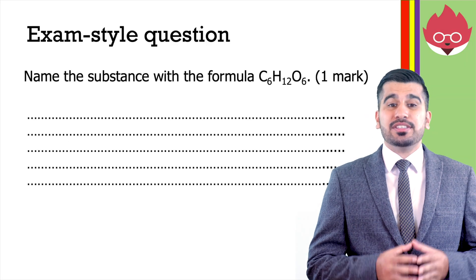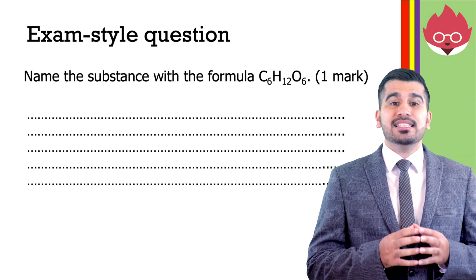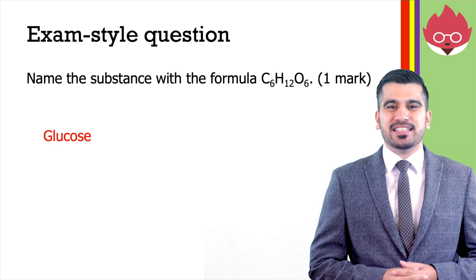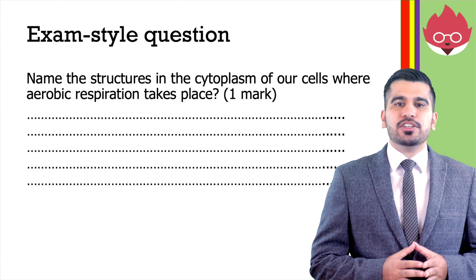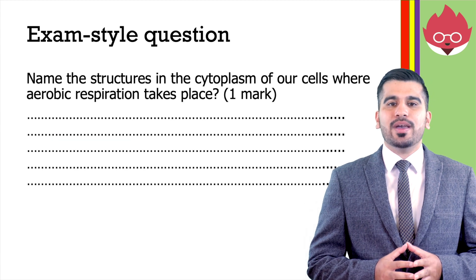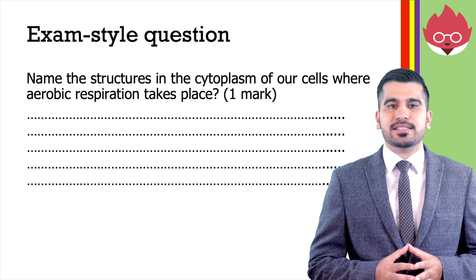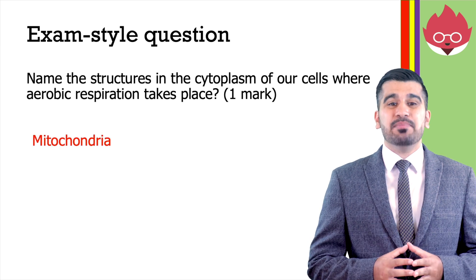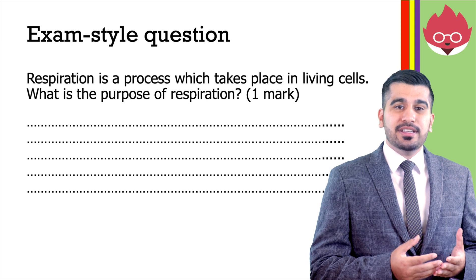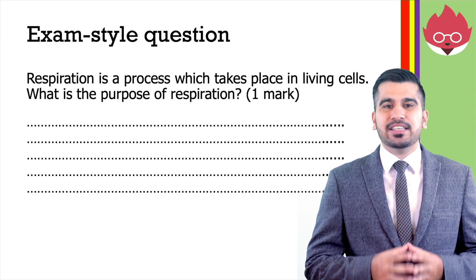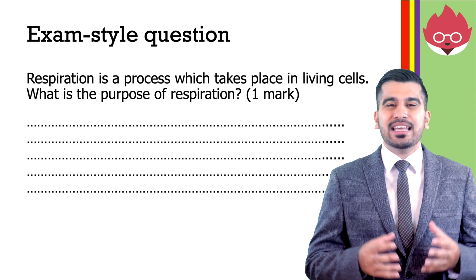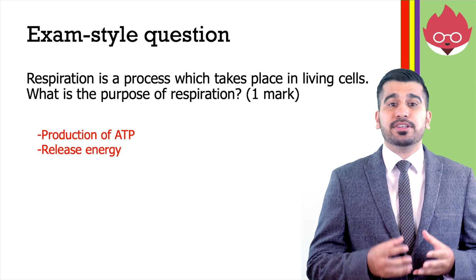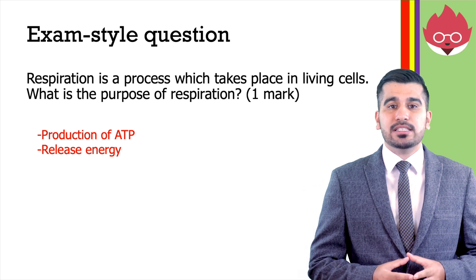Let's take a look at some exam questions. Name the substance with the formula C6H12O6. The correct answer is glucose. Name the structure in the cytoplasm of our cells where aerobic respiration takes place. The correct answer is mitochondria. Respiration is a process which takes place in living cells — what is the purpose of respiration? The purpose of respiration is the production of ATP, or the release of energy.